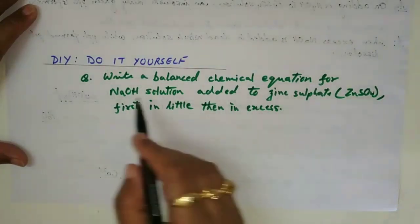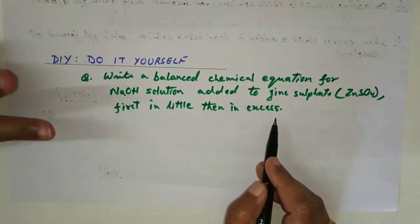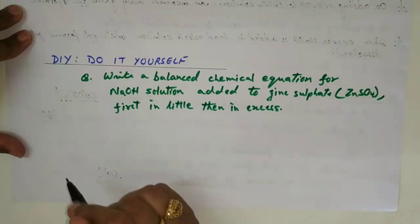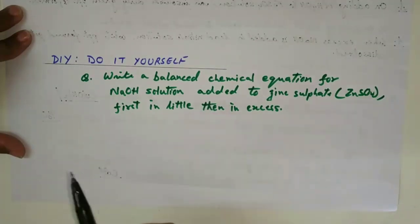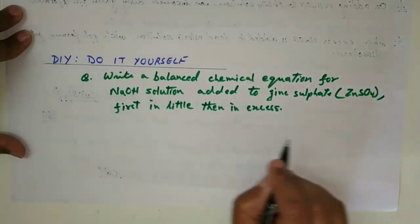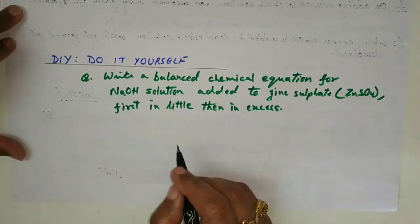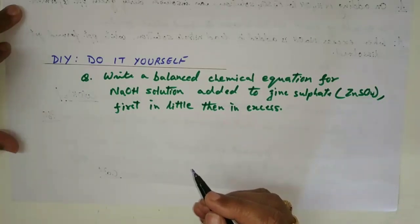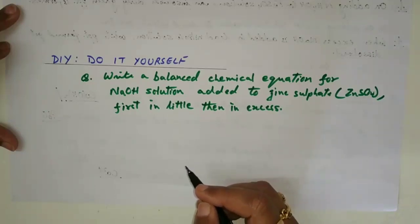Write a balanced chemical equation for sodium hydroxide solution added to zinc sulfate, first in little amount and then in excess. You are going to get questions like this, and also questions where the reactants are given and you have to fill in the products, complete the equation, and balance them. I hope this session will help you a lot. Please try out questions from your textbook, and if you have doubts, put them in the comment section.